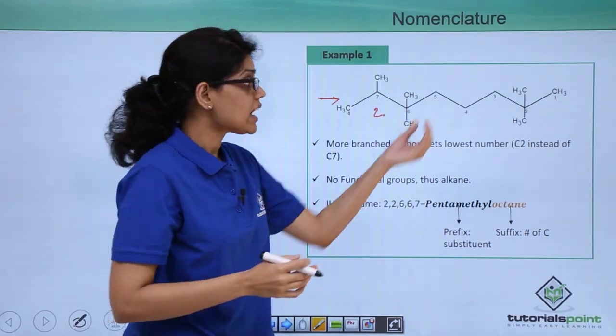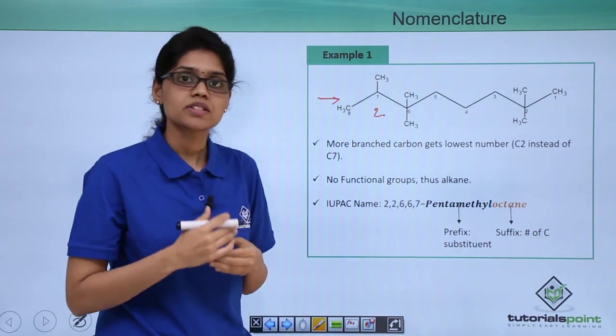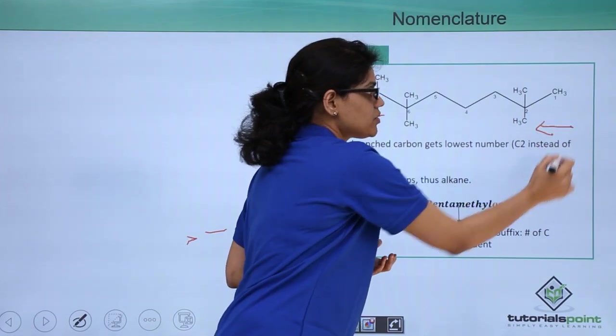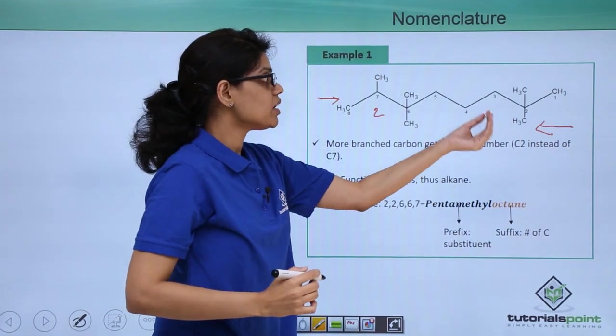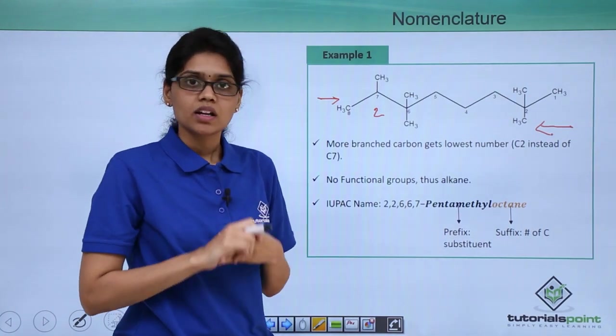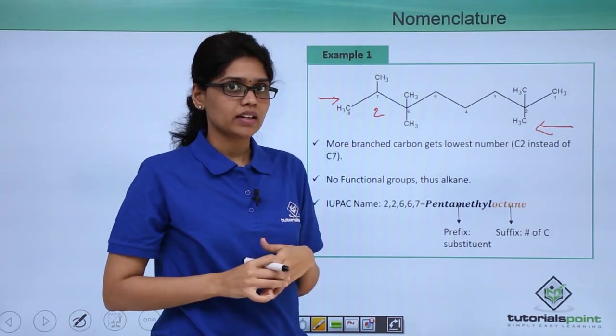Always remember that that carbon will be given higher preference which has more number of branching. For the same reason numbering will be done from this side and these will be the positions at which the substituents are present. Now let's try to name this particular organic compound.